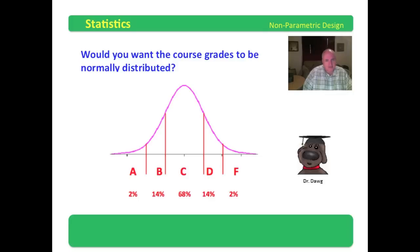68% are going to get C's, 14% B's, 14% D's, only 2% get A's and 2% get F's.